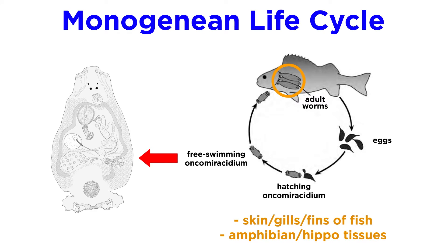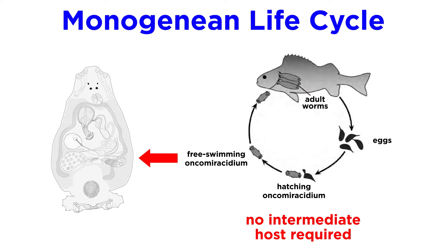They are commonly found on the skin, gills, or fins of fish, and occasionally within the tissues of amphibians and hippos. They have a direct life cycle and do not require an intermediate host.